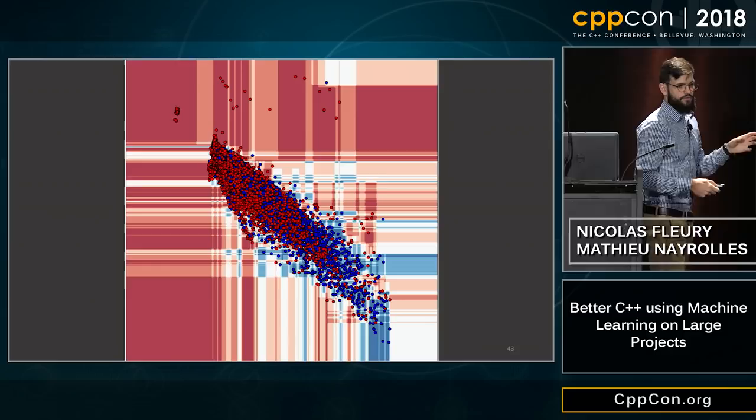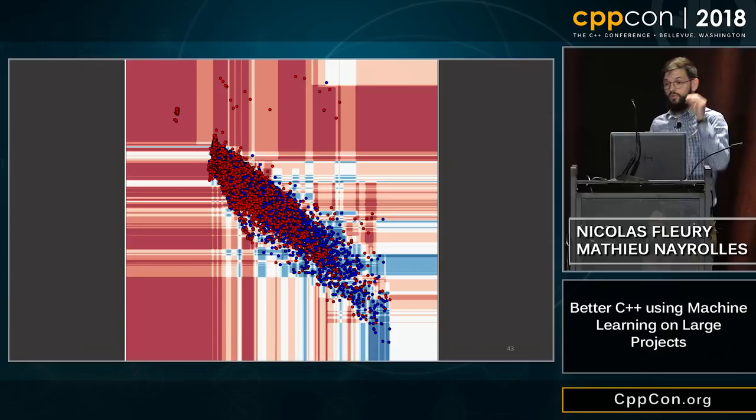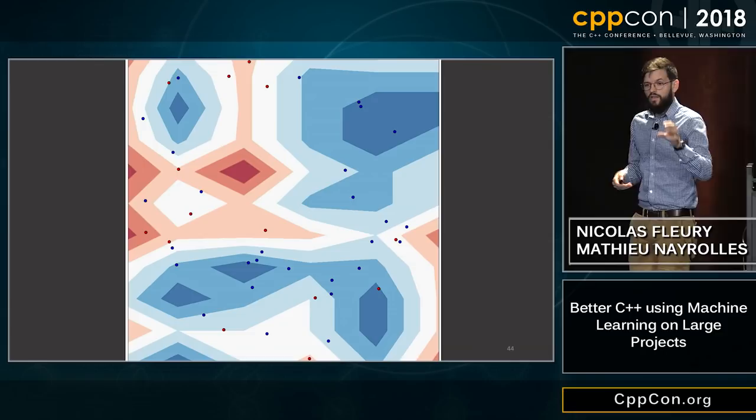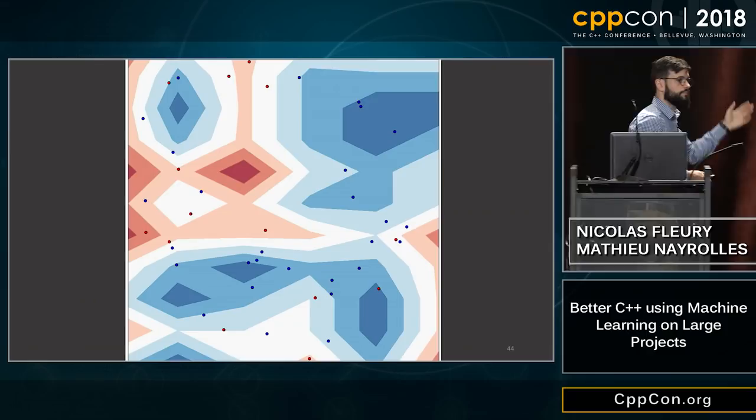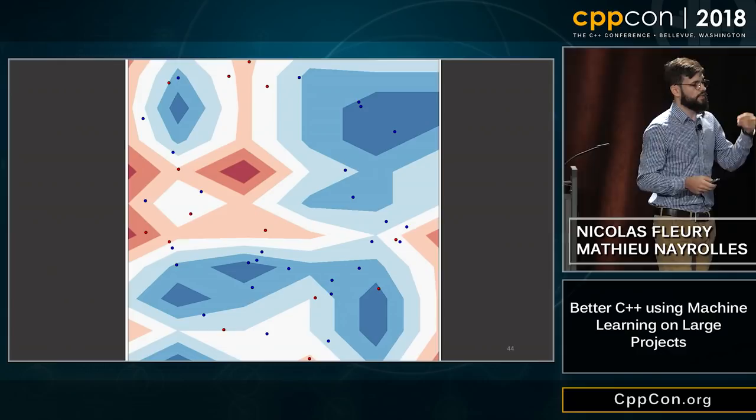The classifier appears to only draw straight lines across the 2D space, but if you zoom in you'll find something more complex. The darker the shade of color, the more certain we are that the commit is either buggy or sane. It's not perfect — there are red dots in blue areas and blue dots in red areas.